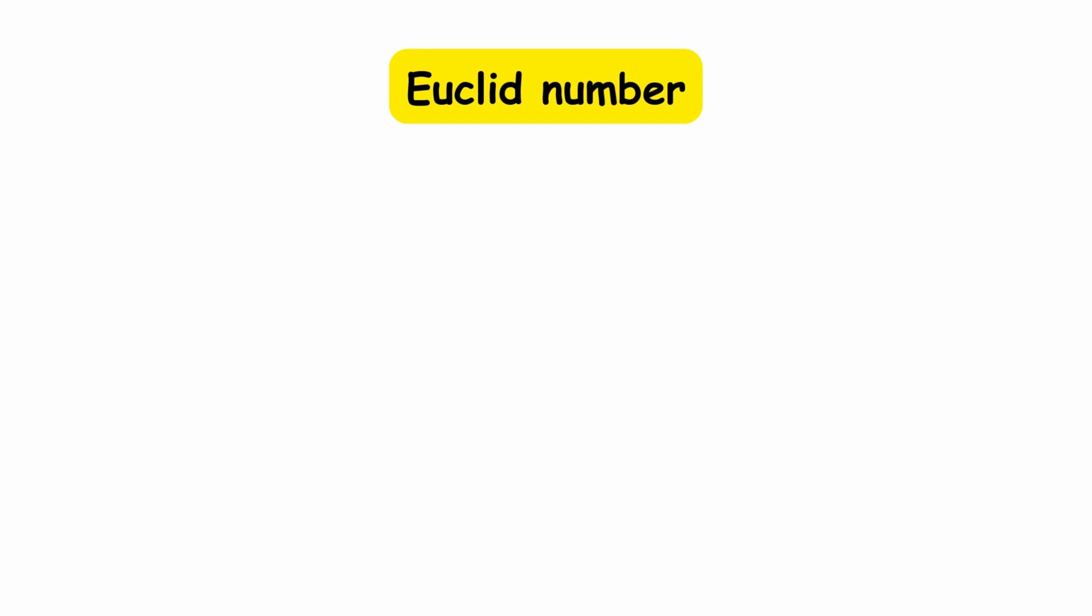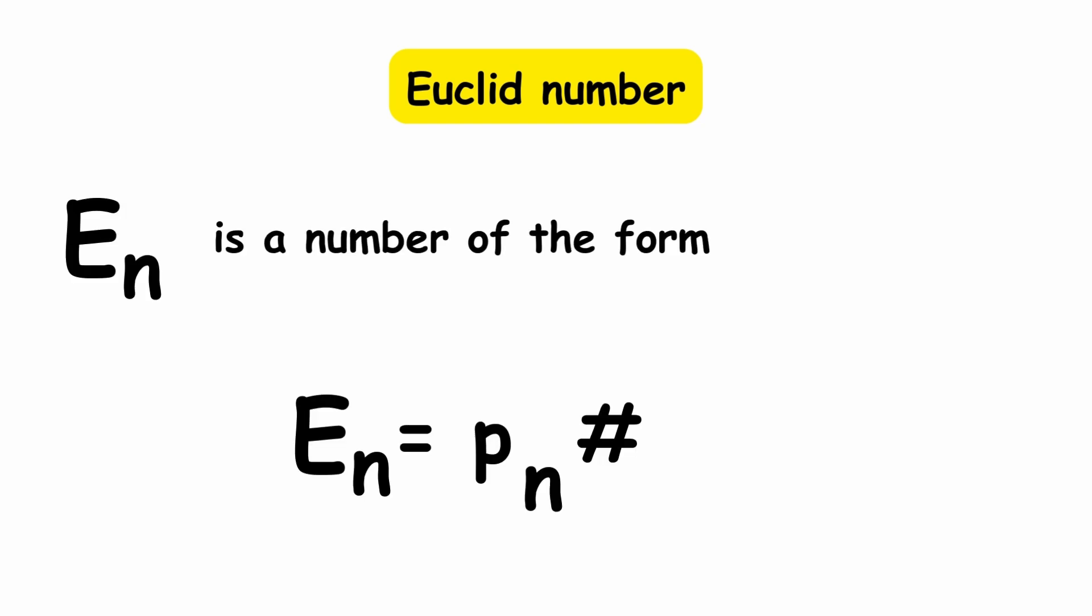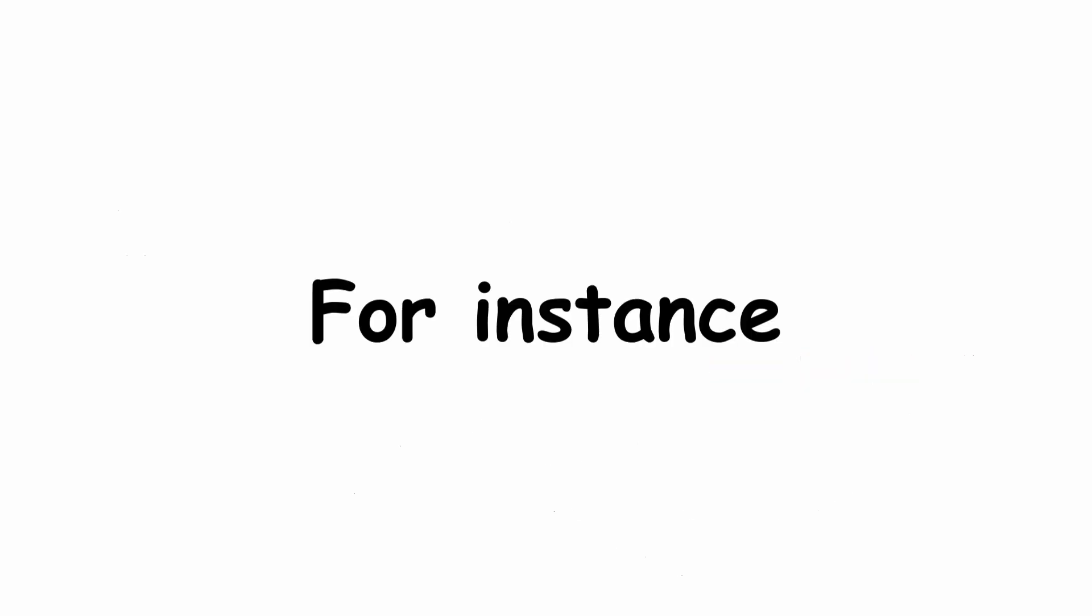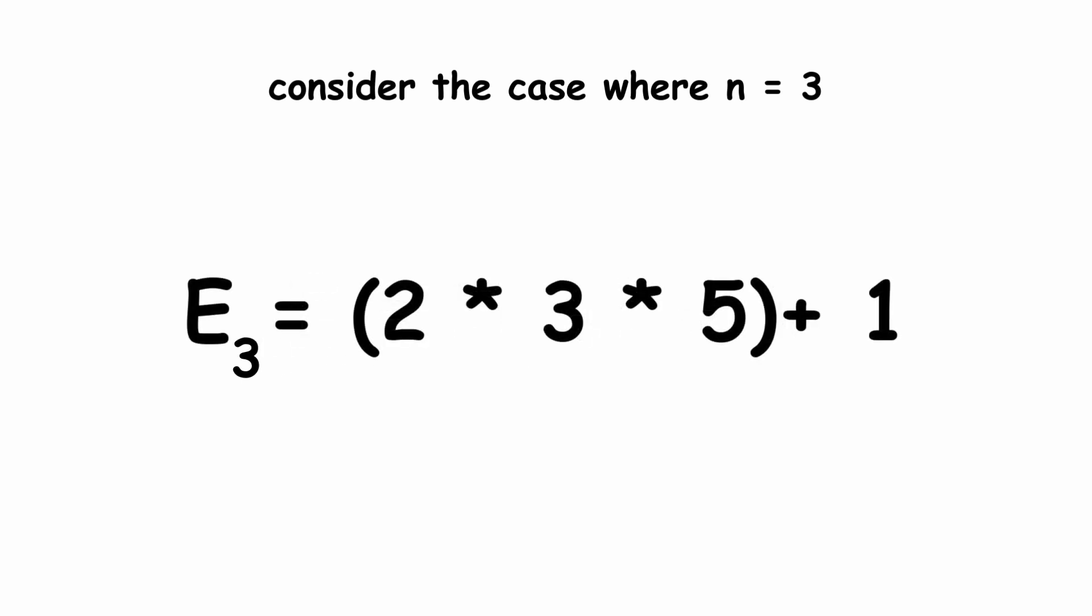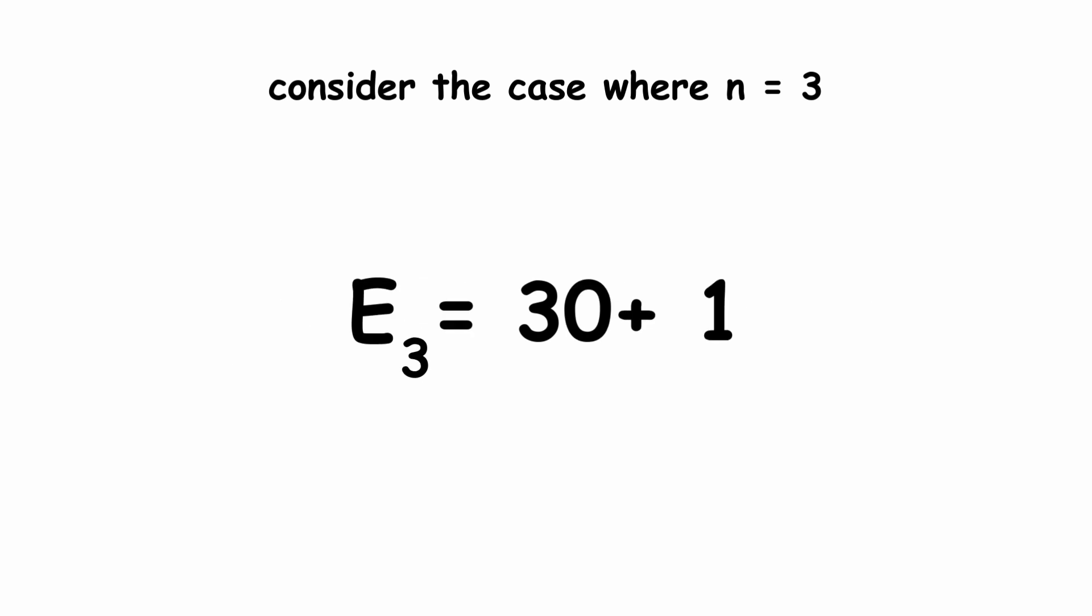A Euclid number, denoted En, is a number of the form En equals pn primordial plus 1, where pn is the nth prime number. For instance, consider the case where n equals 3. The third prime number is 5, and the primordial of 5 is 2 times 3 times 5, or 30. So the third Euclid number is 31.